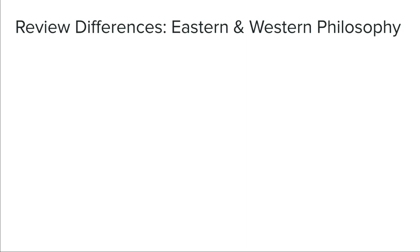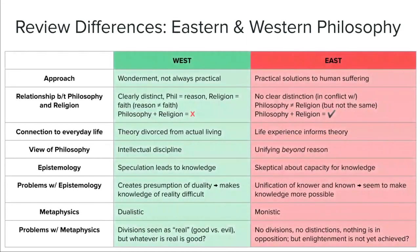Zoroastrianism is really a precursor to the western religious traditions, although there will be some concepts carried over in Hindu polytheism. This is the first of the eastern religious traditions we'll be looking at. To give you a general sense of how eastern religions compare to western religions — and these are generalizations — we have some general characteristics that classify western versus eastern religious traditions.